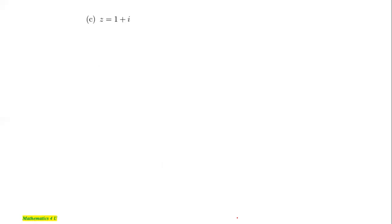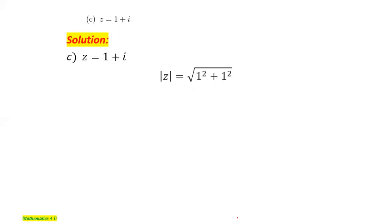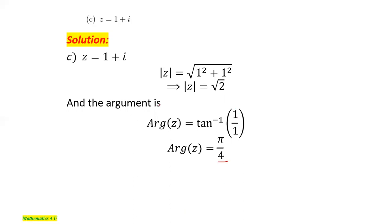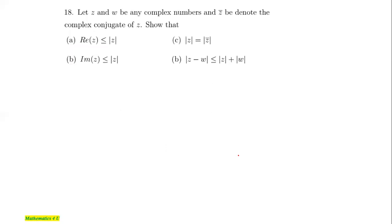For part c, the complex number is 1 + i. It is already in simplified form. The magnitude is √(1² + 1²) = √2. The argument is tan inverse of (1/1) = tan inverse of 1, which is the common angle π/4. It is positive because both the real and imaginary parts are positive, so the angle is in the first quadrant.